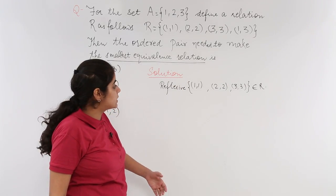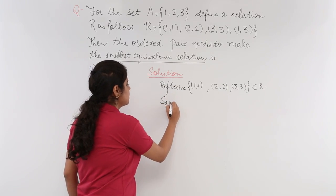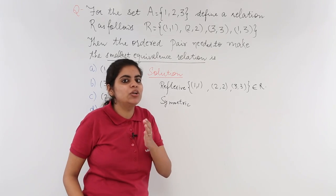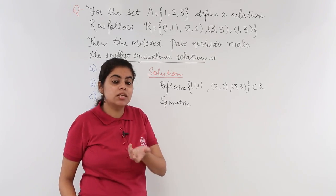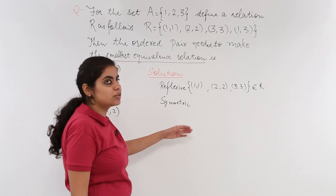Now, let's check what about symmetric? So, for symmetric, I know what is symmetric. If A related to B, that implies B related to A, then it is symmetric. Let's get back to the relation now.